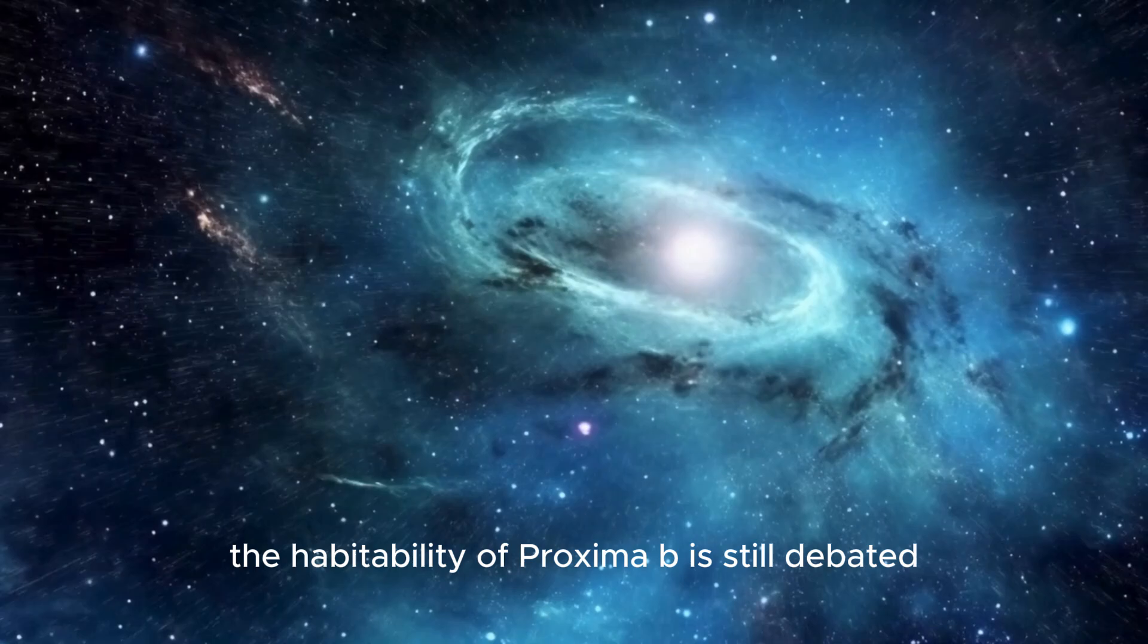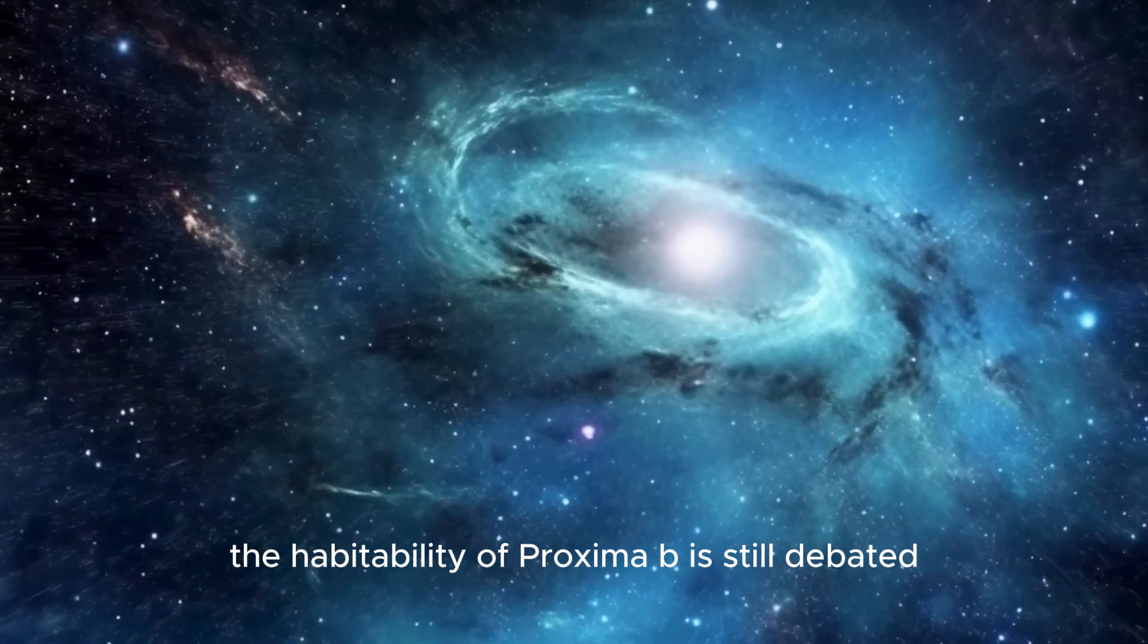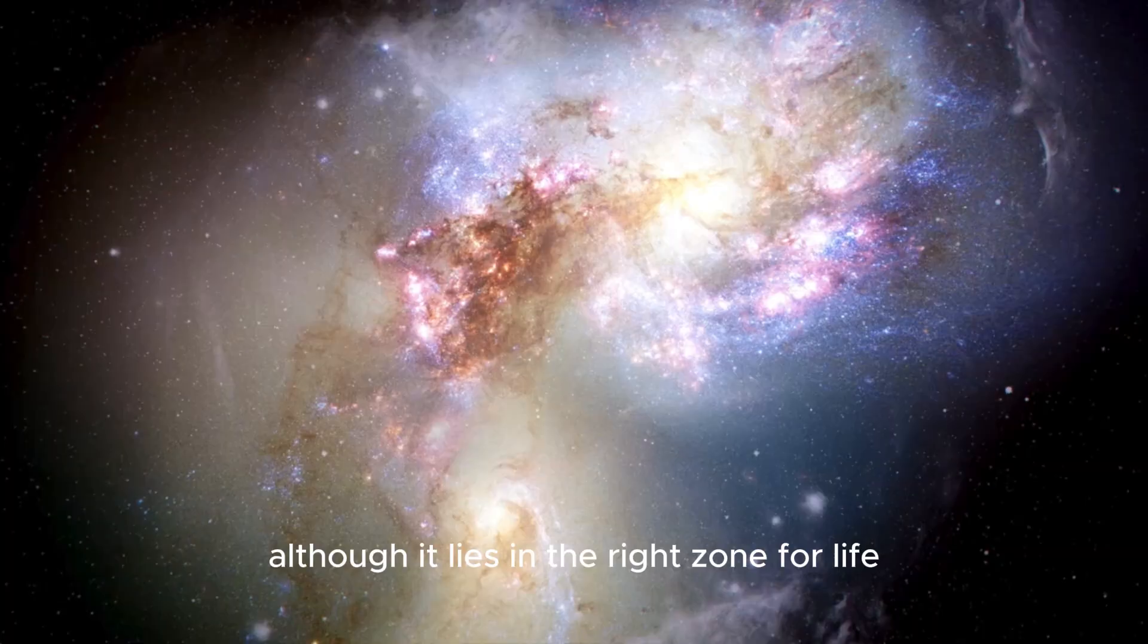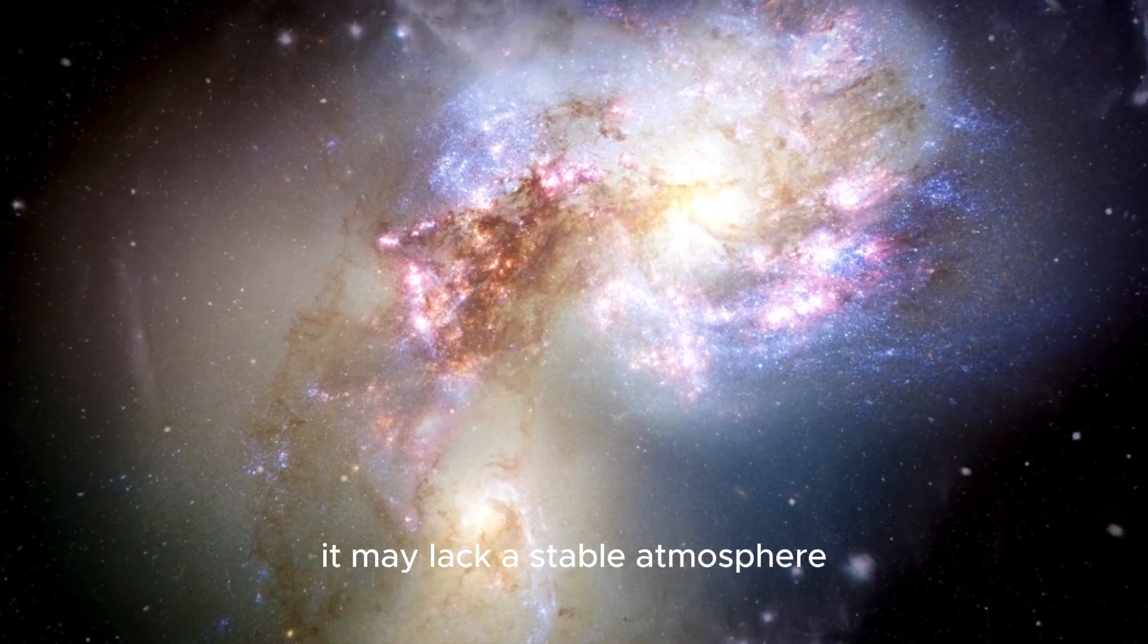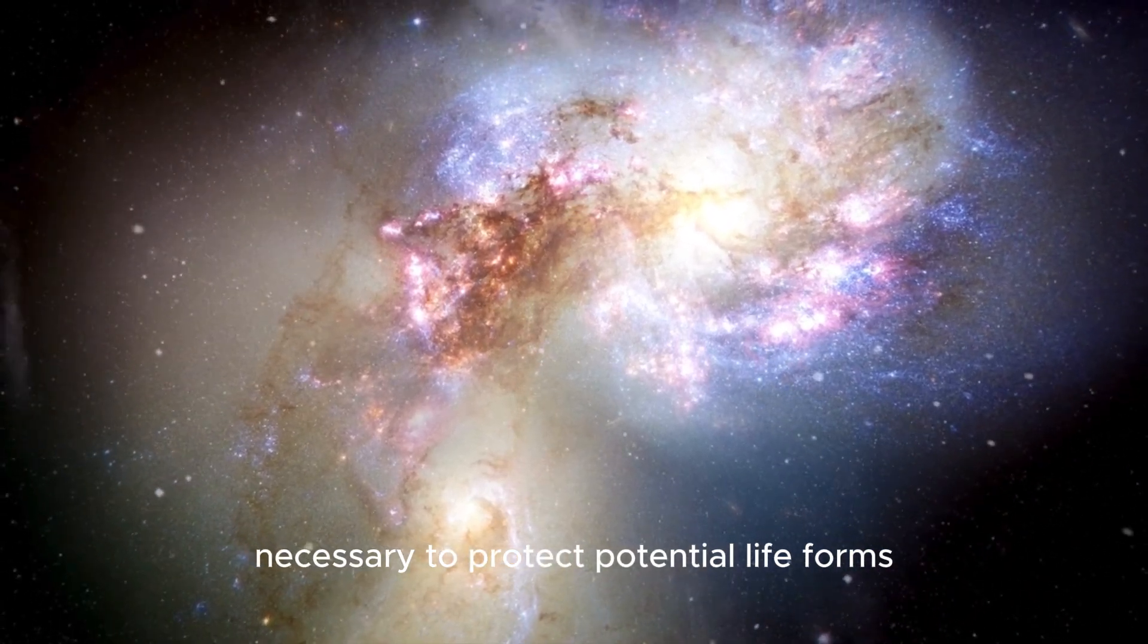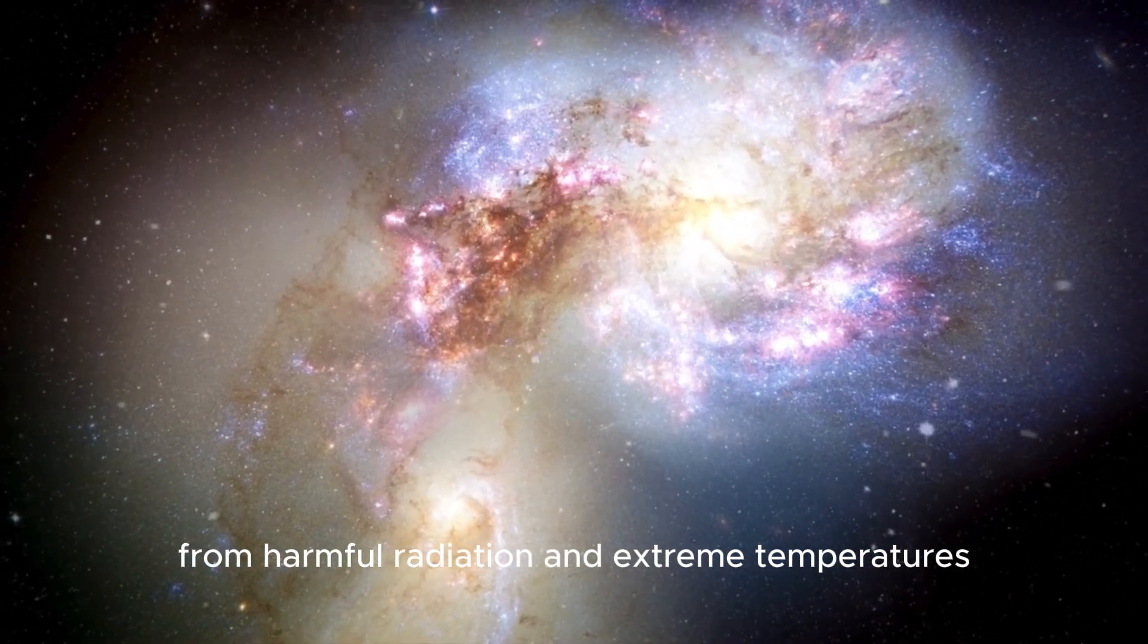The habitability of Proxima b is still debated. Although it lies in the right zone for life, it may lack a stable atmosphere necessary to protect potential life forms from harmful radiation and extreme temperatures.